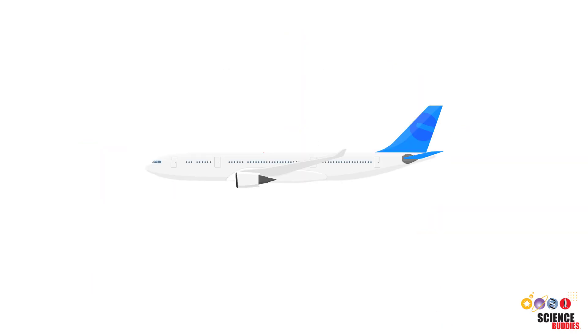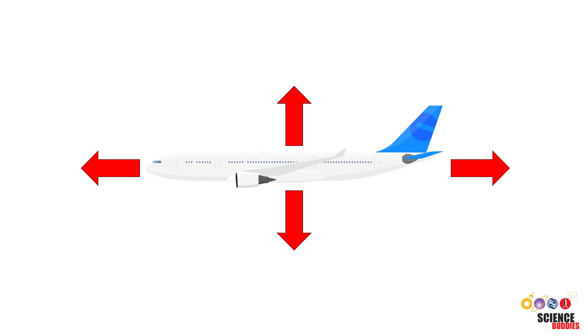Let's start with the airplane. You may have seen this diagram which labels the four forces acting on one. Thrust, which pushes the airplane forward. Lift, generated by the wings, which pushes it upward.